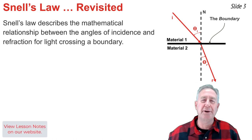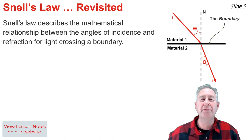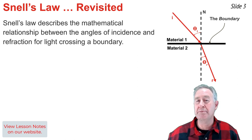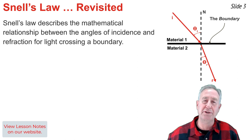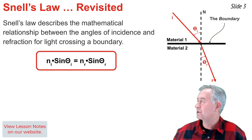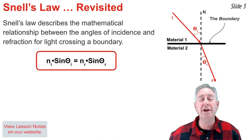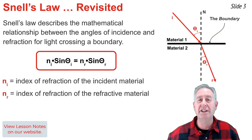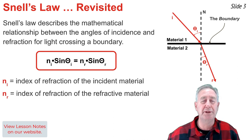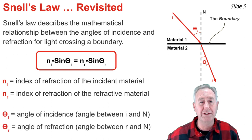When light crosses the boundary between two materials, it undergoes a change in direction. We refer to this as refraction. Snell's Law of Refraction describes the mathematical relationship between the angles of incidence and the angles of refraction. In the equation, the n values refer to the index of refraction of the two materials — we could call them the incident material and the refractive material — and the angles theta describe the angle of incidence and the angle of refraction.